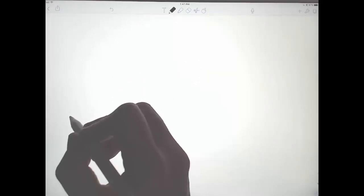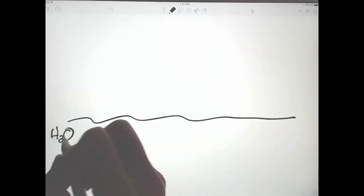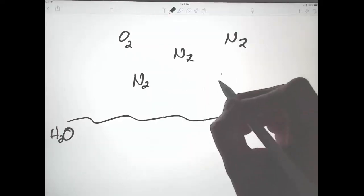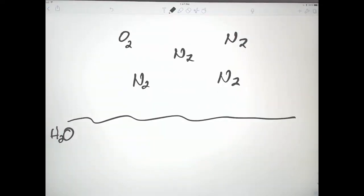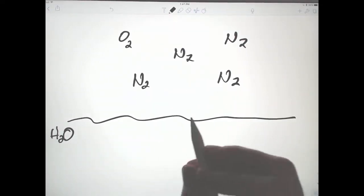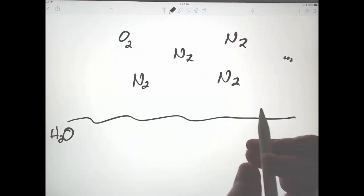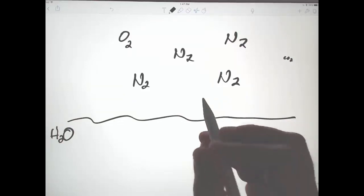Let me sketch through how that might work. So here's water. The molecules above it are about 80% nitrogen, 20% oxygen, and a tiny proportion of carbon dioxide, much less than 1%, and we'll ignore it for the discussion right now.